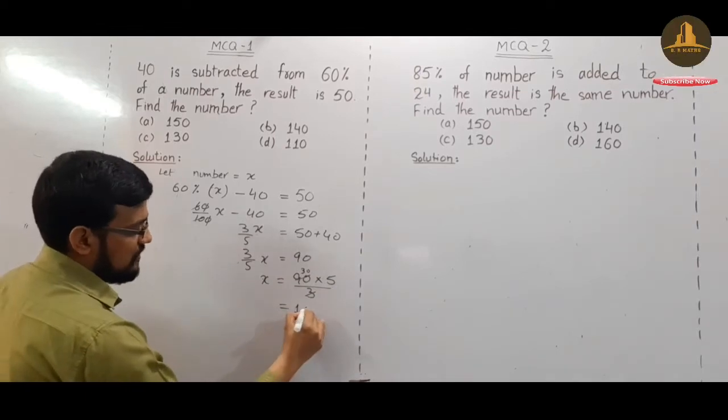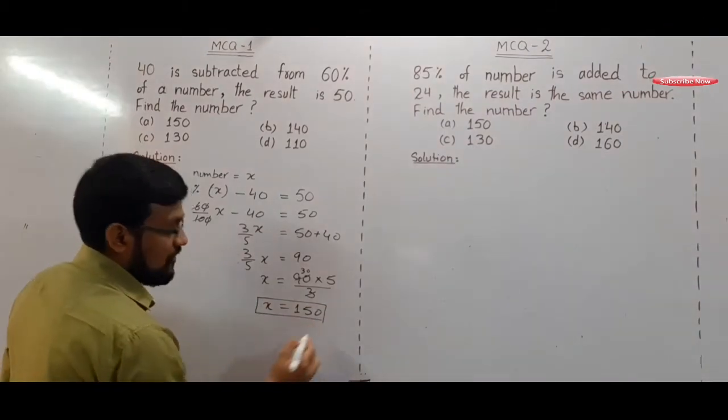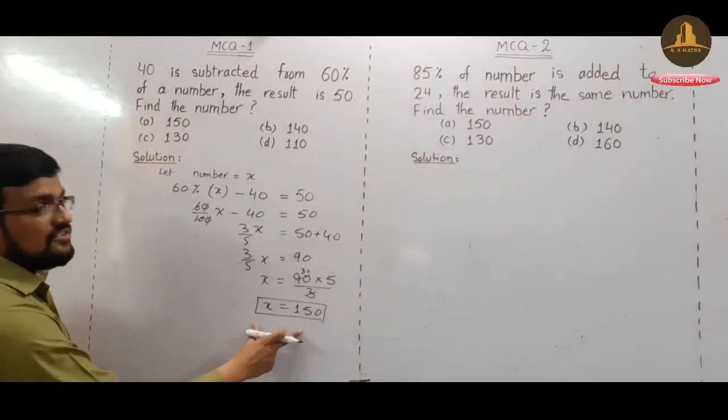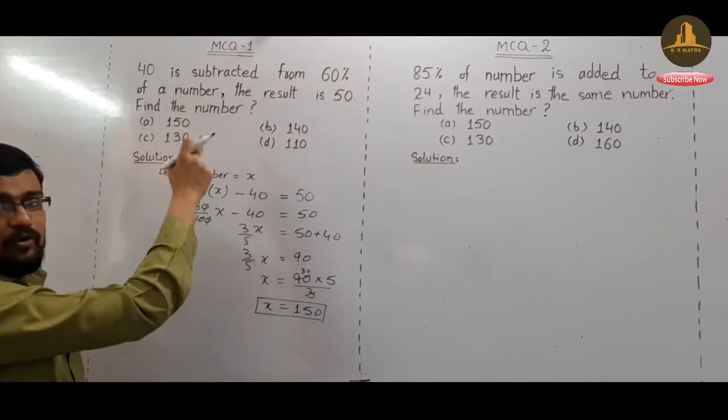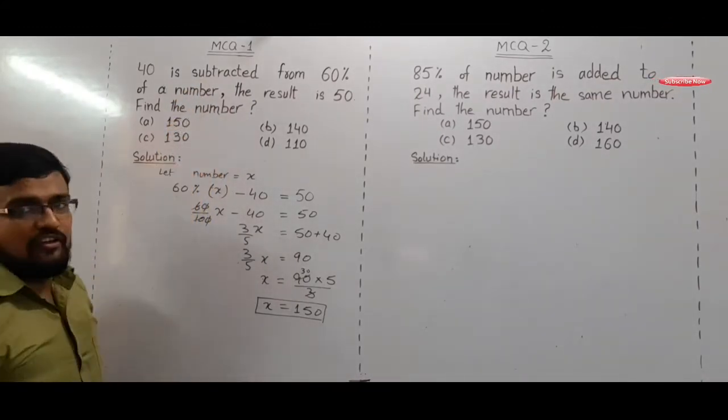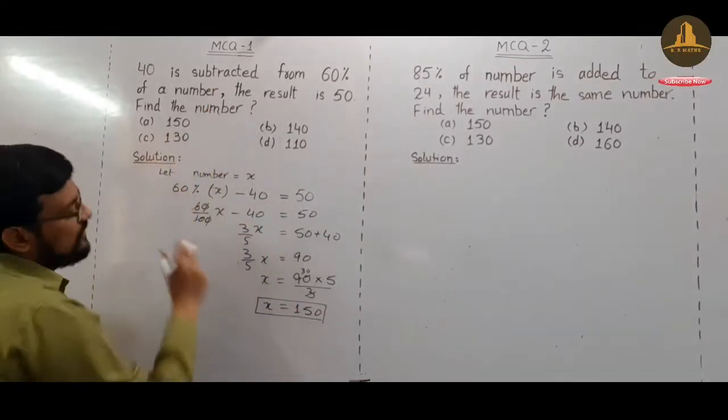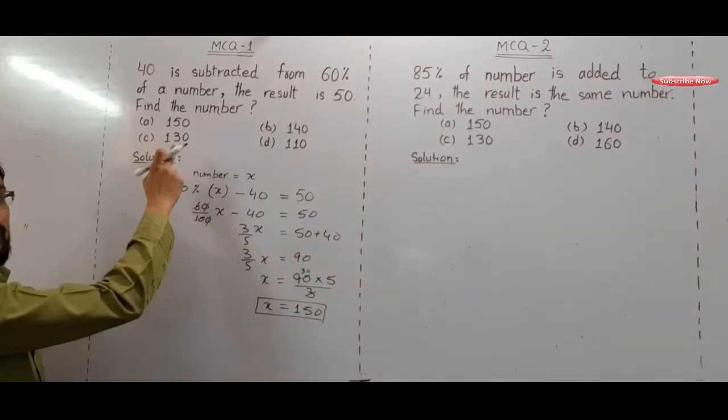So students, this is our result of this important MCQ. The most important MCQs for FPSC, PPSC, or NTS. So X is a certain number, then the final result is 150.